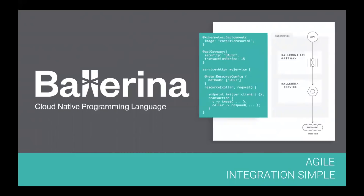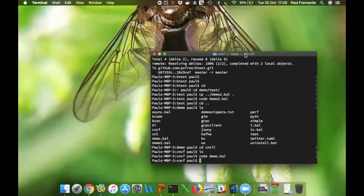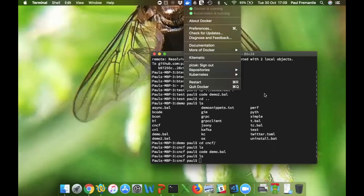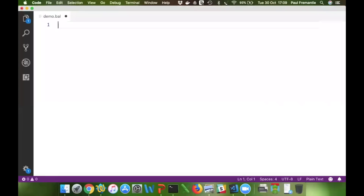The easiest way to explain it is to just show you some code. It's a compiled, type-safe, concurrent programming language — not a dynamic language, but it looks similar to dynamic languages and is not particularly complex. It has a lot of concurrent constructs, which are very important to network handling. I have Visual Studio Code with Ballerina installed, along with Docker and Kubernetes running for some of the demos. I'm going to start up a new Ballerina file (.bal) and let's start by writing a Hello World.